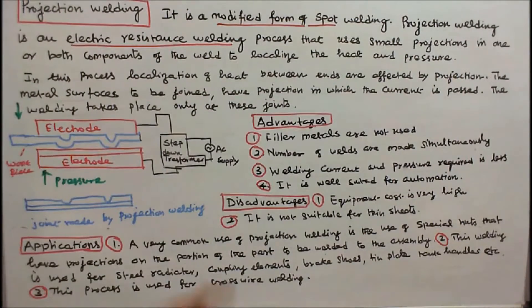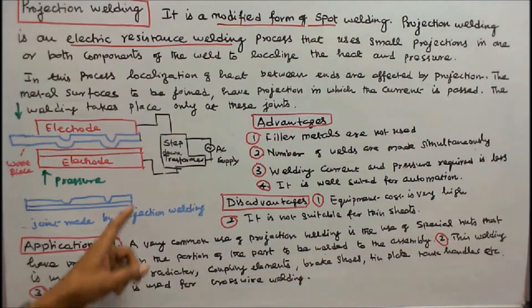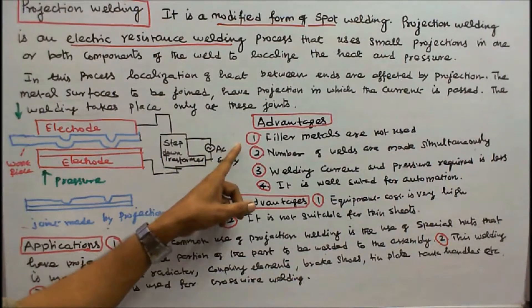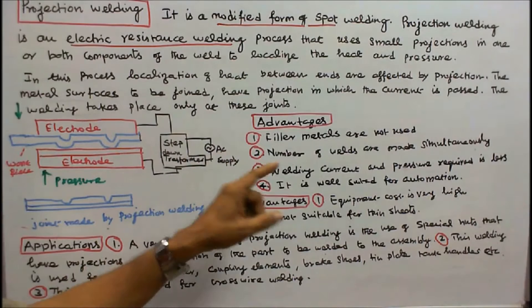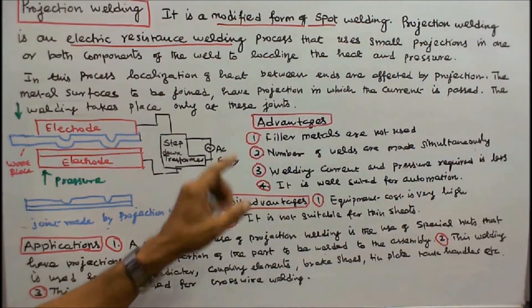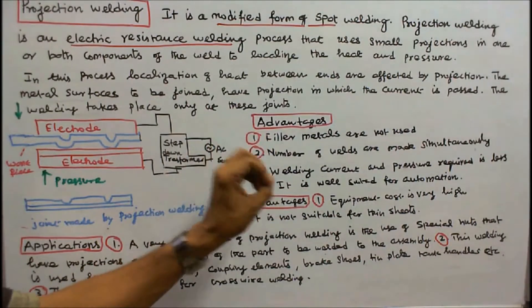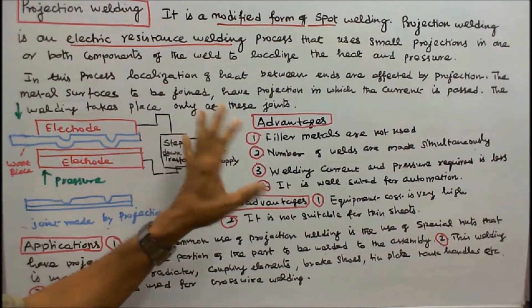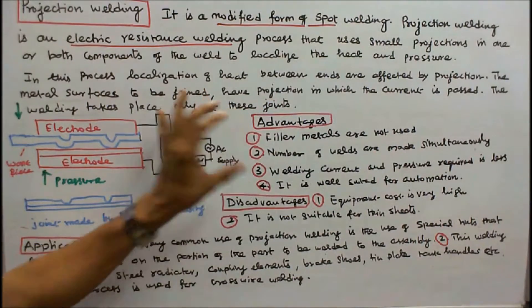Now we will see the advantages, disadvantages, and applications of projection welding. Advantages: Number 1 — filler metals are not used. Number 2 — a number of welds are made simultaneously. Number 3 — welding current and the pressure required is less. Number 4 — it is well suited for automation.